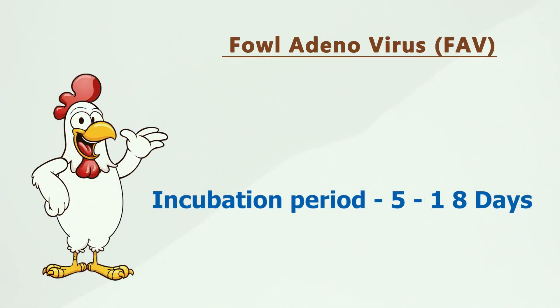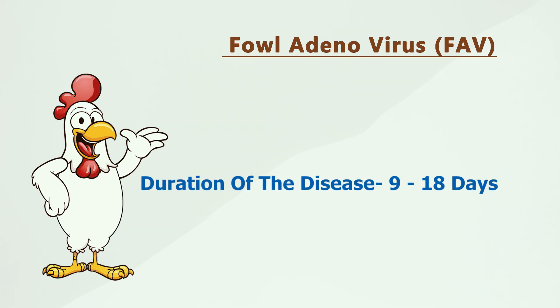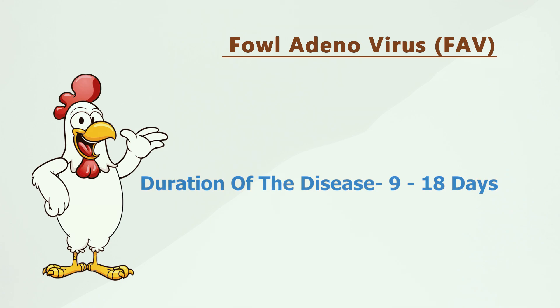The disease spreads both vertically and horizontally — vertically from mothers laying eggs, and horizontally from bird to bird or farm to farm. The incubation period of this disease is 5 to 18 days and the duration of the disease is usually around 9 to 18 days.